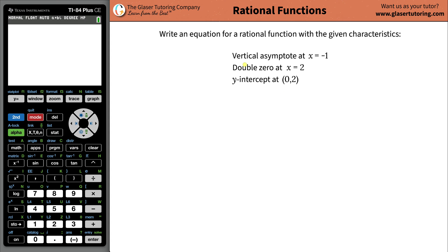How you doing? It's Andrew here. Today I'd like to teach you how to find the equation for a rational function with given characteristics: a vertical asymptote at x equals negative one, a double zero at x equals negative two, and a y-intercept at two.